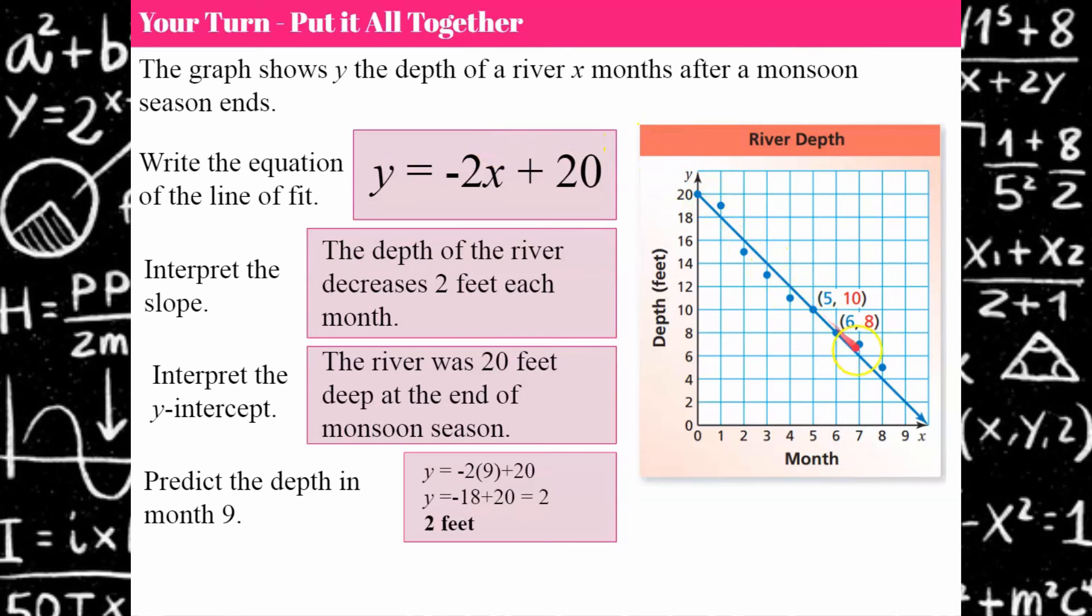Remember our line is sloping down. There's a negative linear relationship here so my slope should also be negative. And my y-intercept where the line crosses the y-axis is 20. So the equation of my line of fit is y equals negative 2x plus 20.